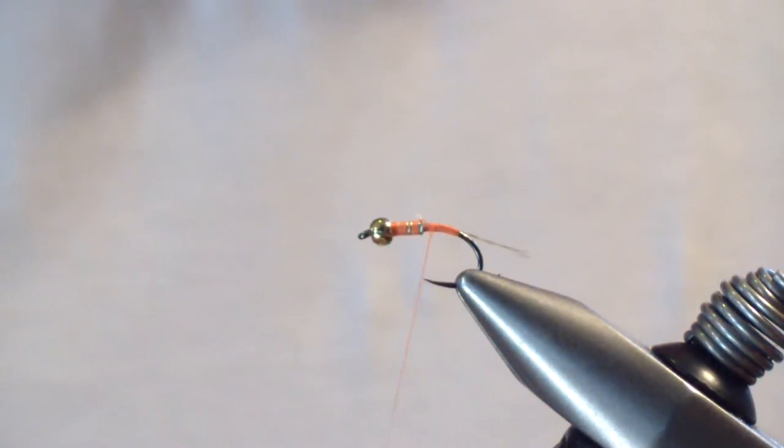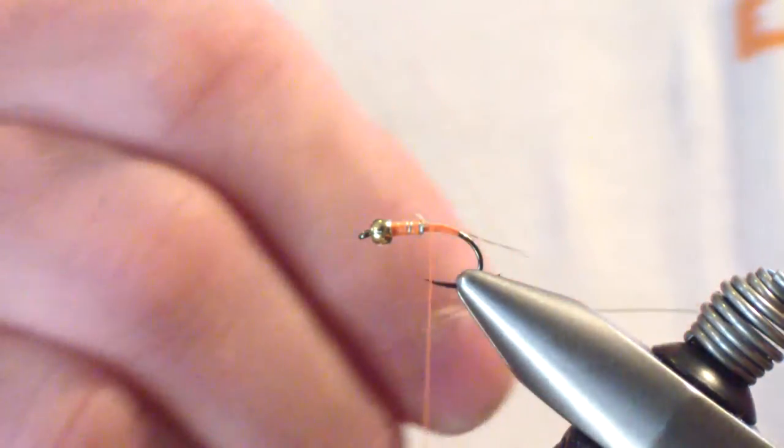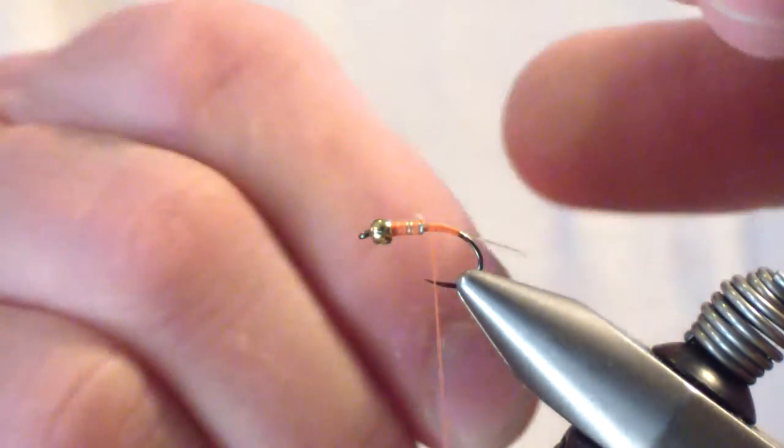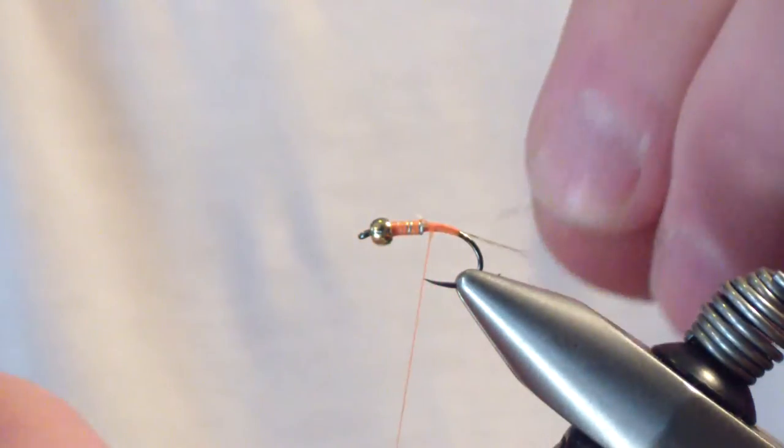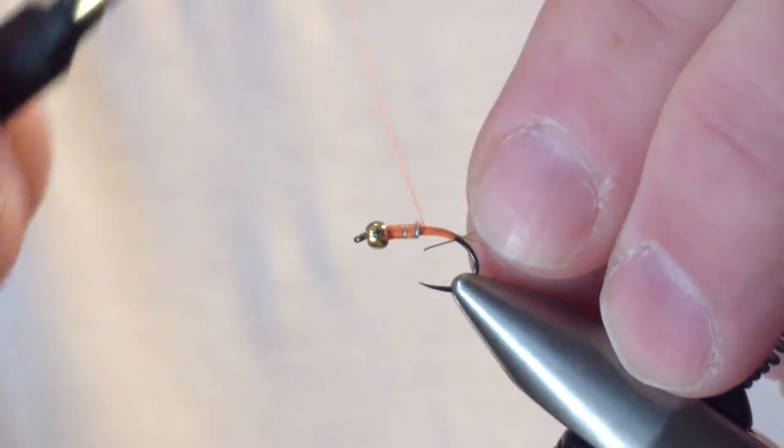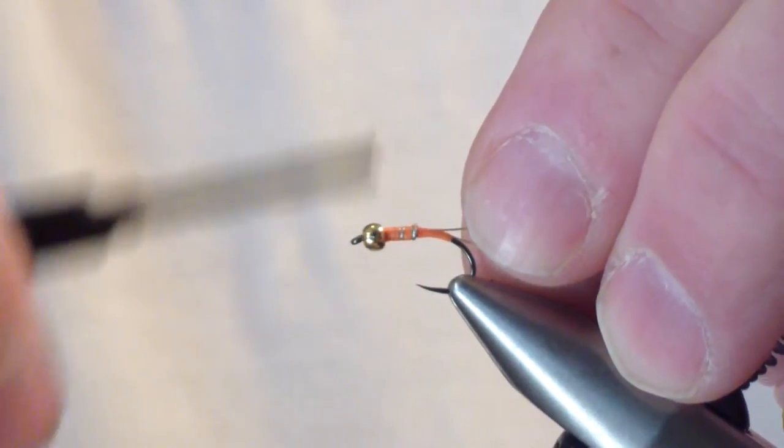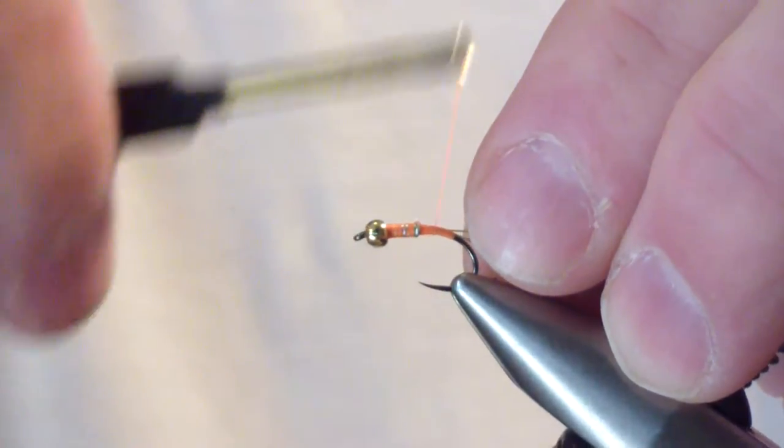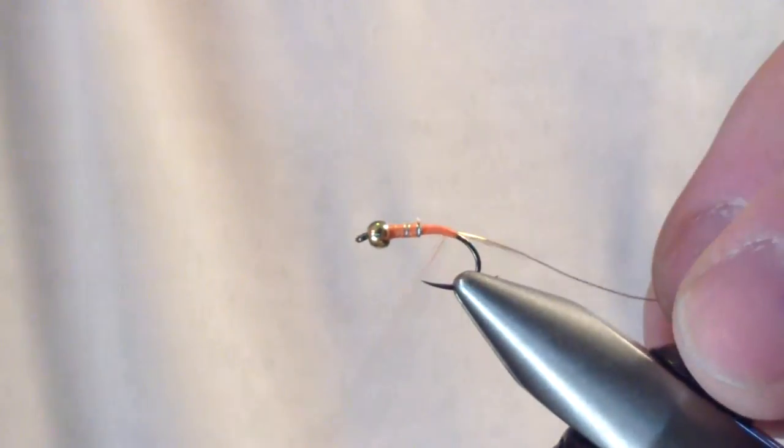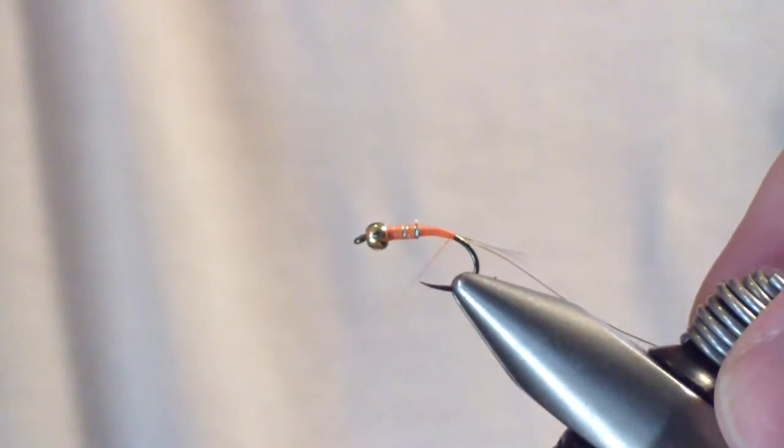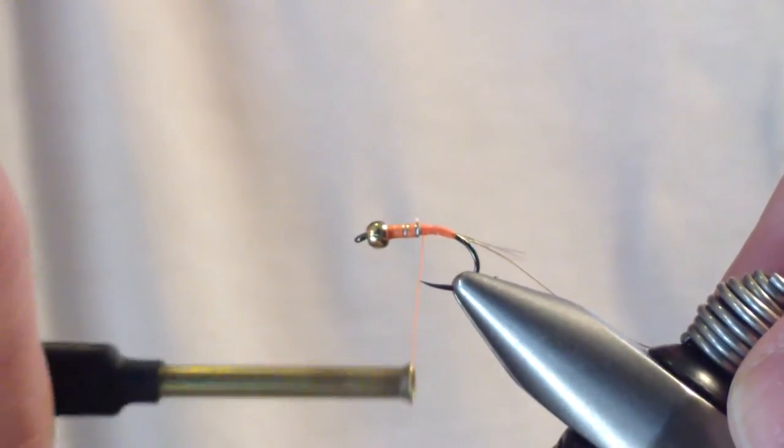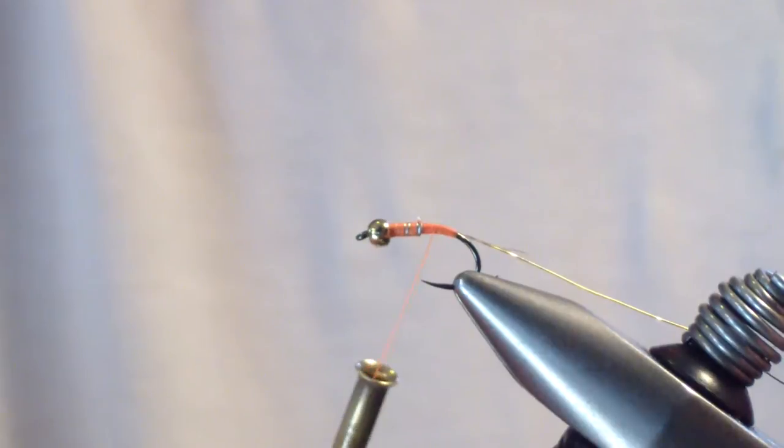The next material you're going to tie in is fine gold wire. And again, you're going to tie that in on the side of the hook just behind the lead. And we'll stow that.